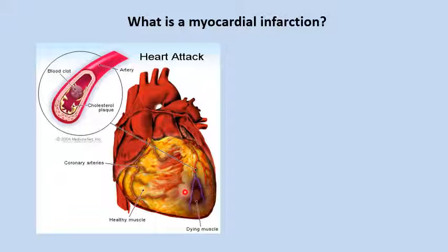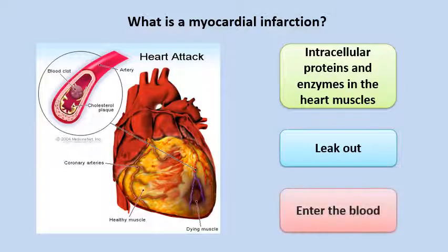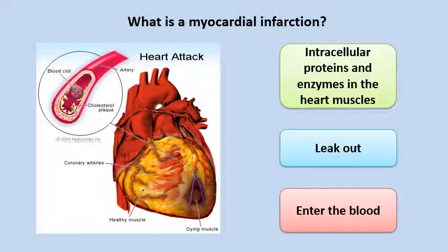When the blood supply is stopped, the supply of oxygen and nutrients will also be reduced. As a result, the heart muscle cells beyond that point will die. When the heart muscles die, the intracellular proteins and enzymes in these muscle cells will leak out and enter the bloodstream. In clinical biochemistry, we take a blood sample from these patients, separate the plasma, and analyze it for these proteins — which helps us diagnose myocardial infarction and monitor the outcome of treatment once it is started.